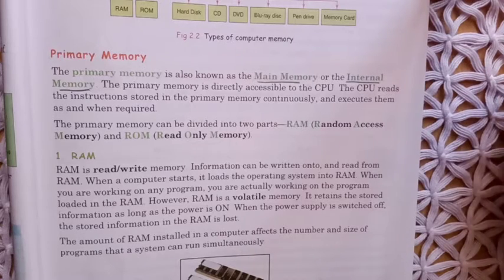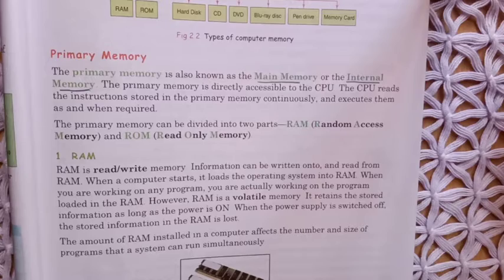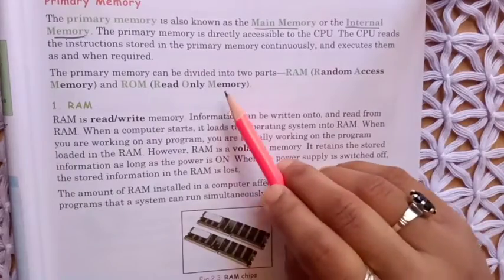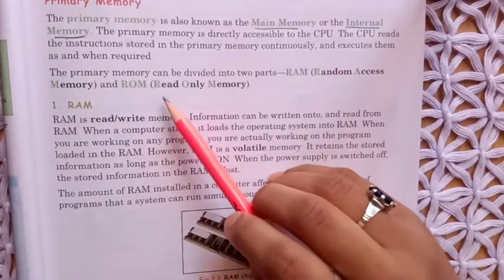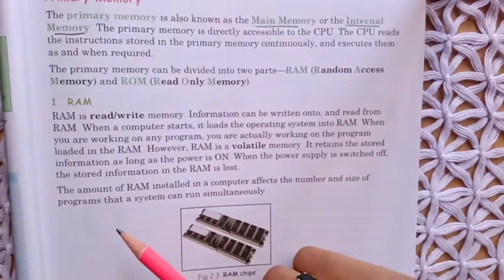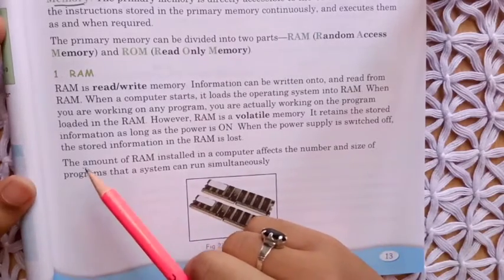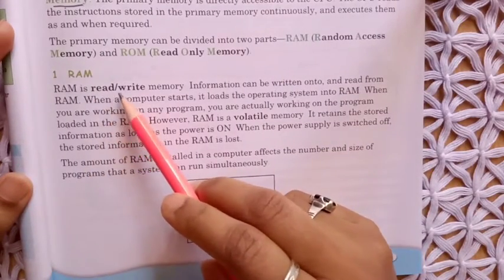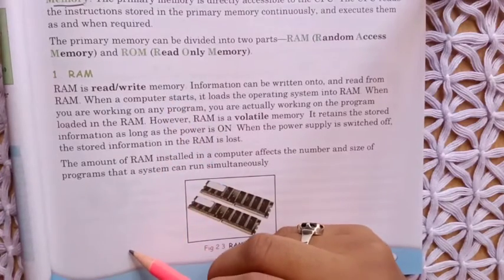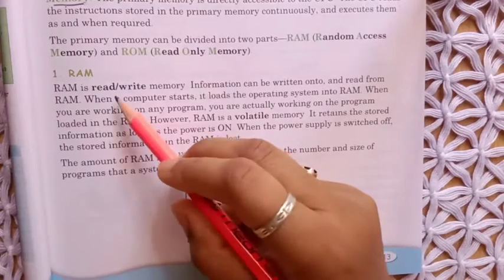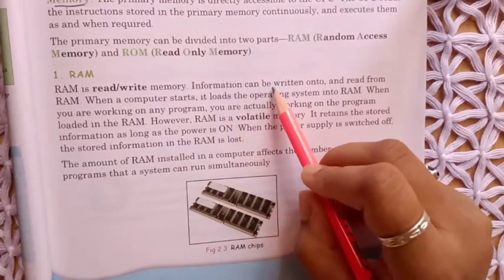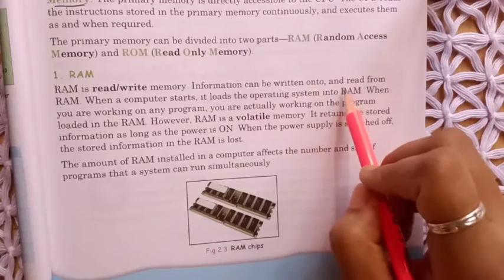The CPU reads the instructions stored in primary memory and gives us results according to that. The primary memory can be divided in two parts: RAM, that is random access memory, and ROM, that is read-only memory. RAM is read-write memory, which means we can change the data that is already saved in RAM.